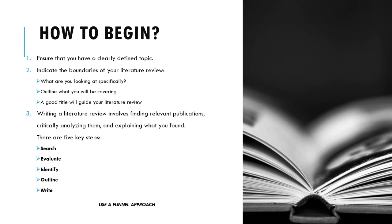Writing a literature review involves finding relevant publications, critically analyzing them, and explaining what you found. There are five key steps: search for relevant literature, evaluate the sources, identify themes, debates and gaps, outline your structure, and write your literature review. All of this uses what we call a funnel approach. A good literature review doesn't just summarize sources — it analyzes, synthesizes, and critically evaluates to provide a clear picture of the state of knowledge on the subject.